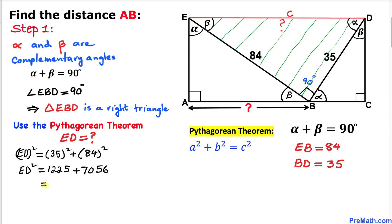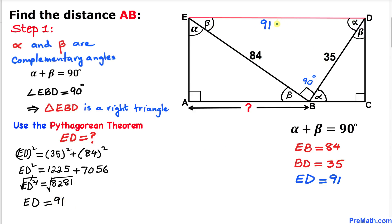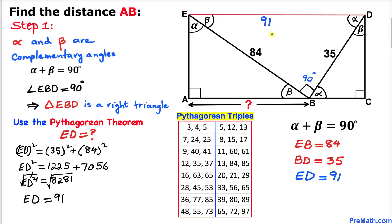Adding them up gives us 8281. Taking the square root of both sides, ED equals positive 91. Since ED represents a side length it must be positive, so ED equals 91 units.